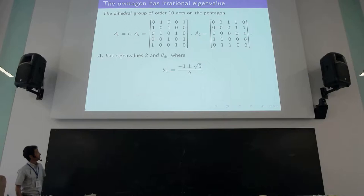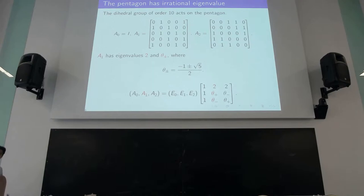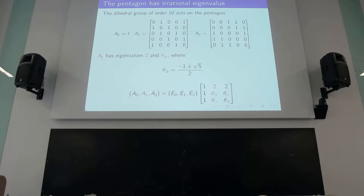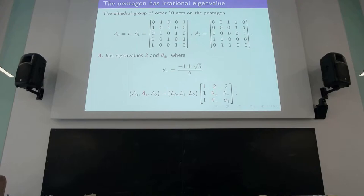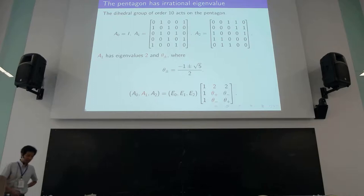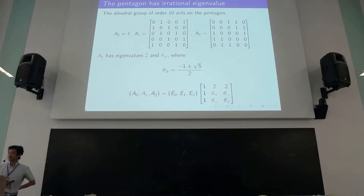I abbreviate these two irrational numbers as theta-plus and theta-minus. A1 has these two eigenvalues, so correspondingly there are three primitive idempotents. You can write A1 as a linear combination of primitive idempotents, and then immediately write the other adjacency matrices in terms of primitive idempotents. You do have irrational entries in the eigenvalue matrix. But square root of 5 comes from the fifth root of unity, so it does belong to the cyclotomic field. This simple example does not give a counterexample to the open problem.